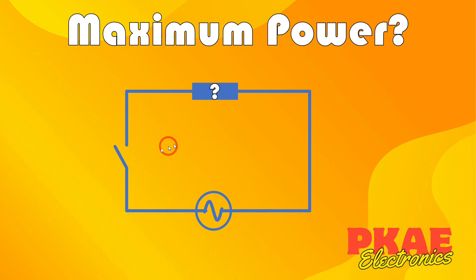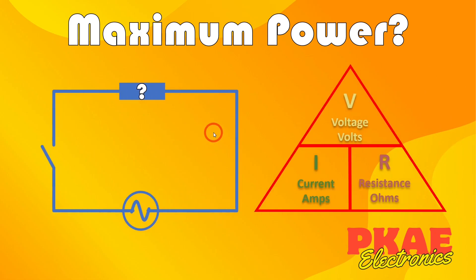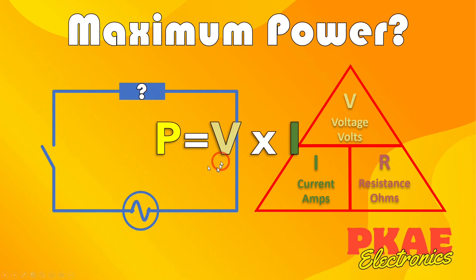When you have a very basic circuit like this, with some kind of supply and a single resistor, you'd expect the maximum power to occur when this resistor is at its lowest. Because Ohm's law tells us that current is voltage divided by resistance — so the lower the resistance, the higher the current. And of course power is voltage times current, so the higher the current, the higher the power.